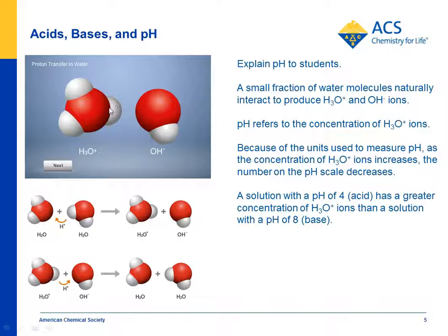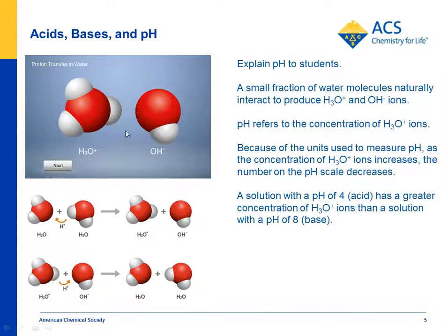If the electron had also transferred, it would be neutral. But the electron stays behind, making an OH- ion because it has an extra electron — the one left behind. We try to show students that it's the concentration of H3O+ ions that dictates the pH of the solution.